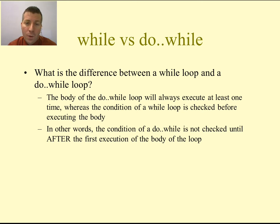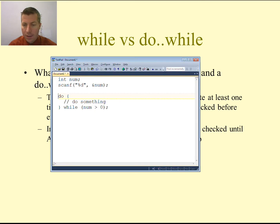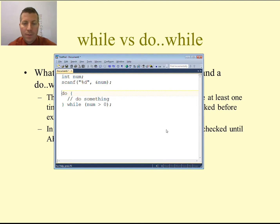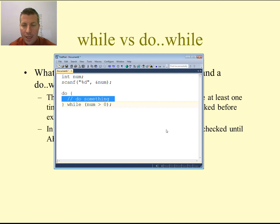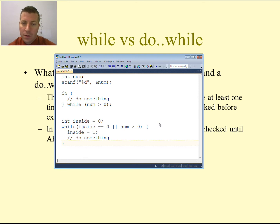Do-while loops are not used as commonly as while loops. However, there is an easy way to always make a while loop perform exactly the same as a do-while. Let's say we have some integer value num, and we read in the value of num from the user, doing something based on that value, looping as long as num is greater than zero. We just have to make sure we get inside the while loop at least one time. We can do that with code like this.